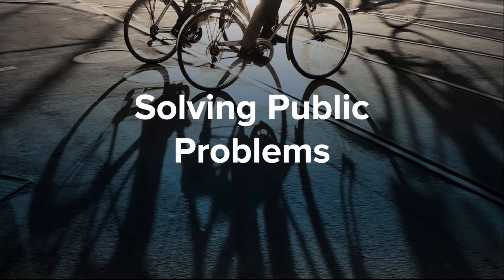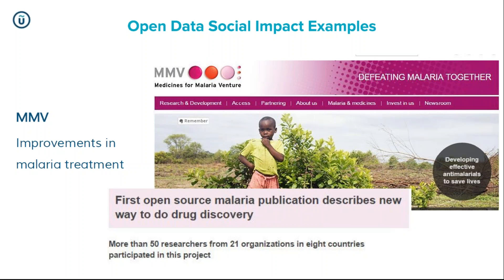Moving to the solving public problems element — there are a lot of really good examples of open data being used in critical situations to benefit society. We've got improvements in malaria treatment — an example of not just open data but open sharing of information and ideas. The open development of malaria drugs allowed lots of different organisations to be involved in the open source development of anti-malarial drugs. As a result, four new anti-malarial drugs were developed and a box of anti-malarial compounds is freely available to anyone wishing to develop new drugs in developing countries.